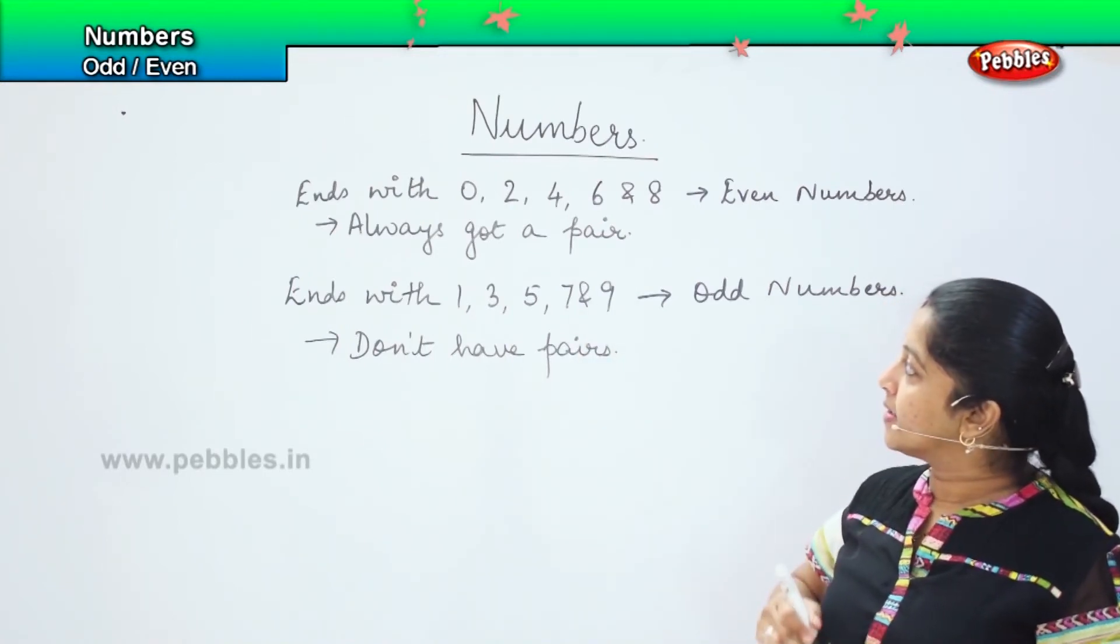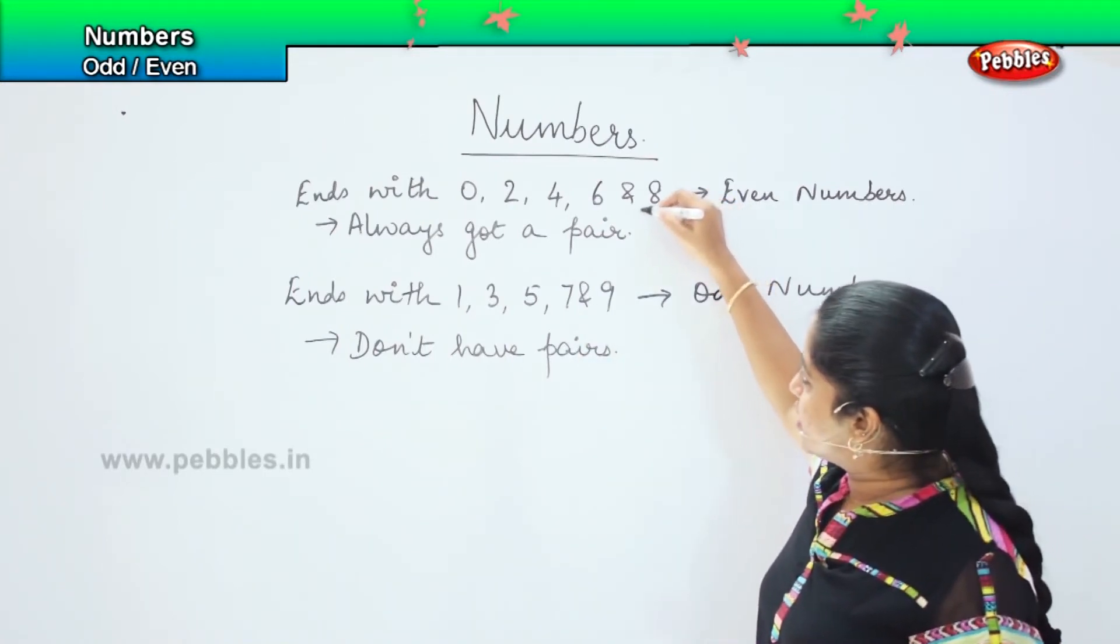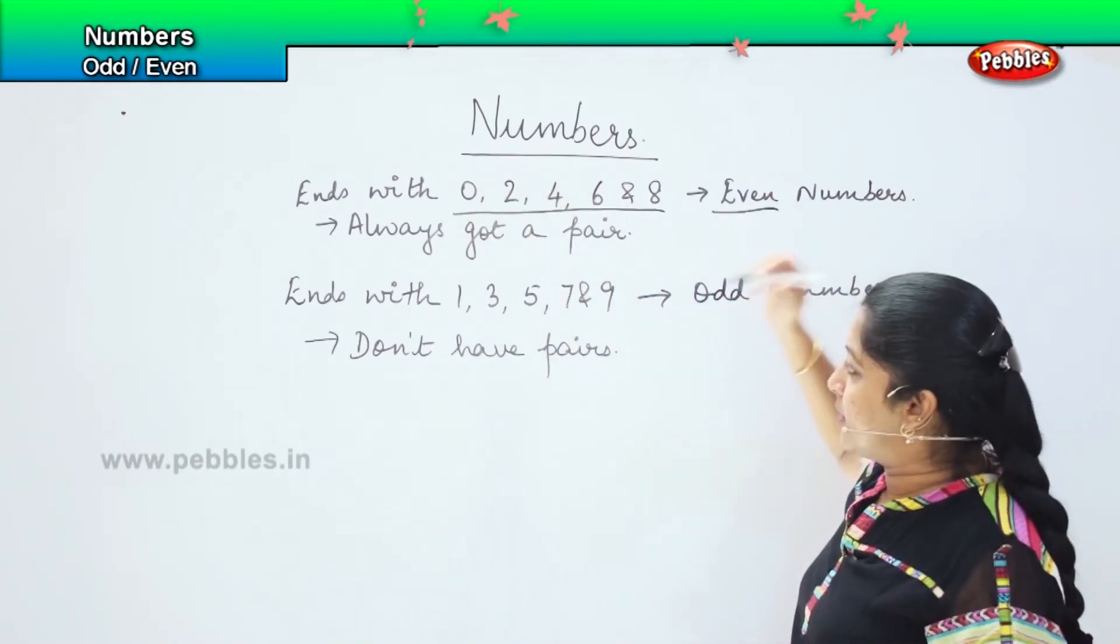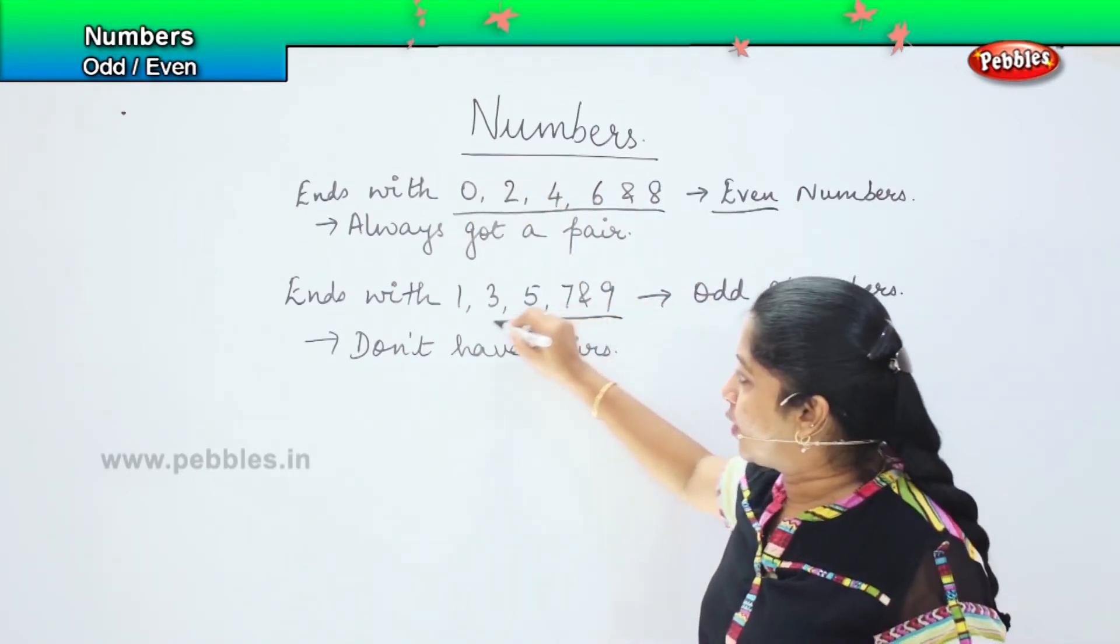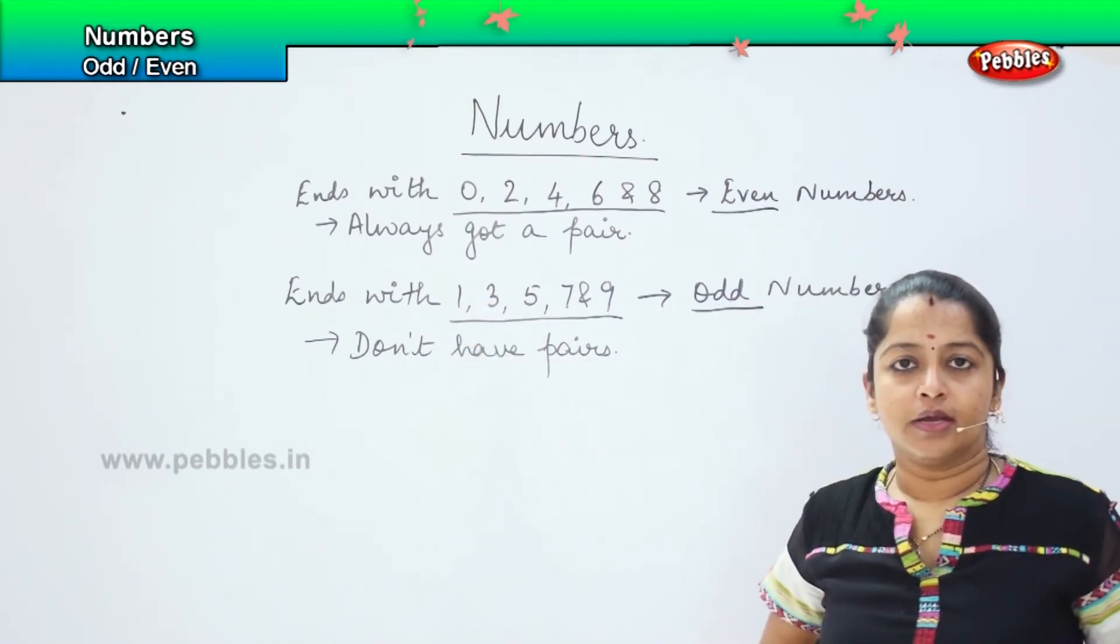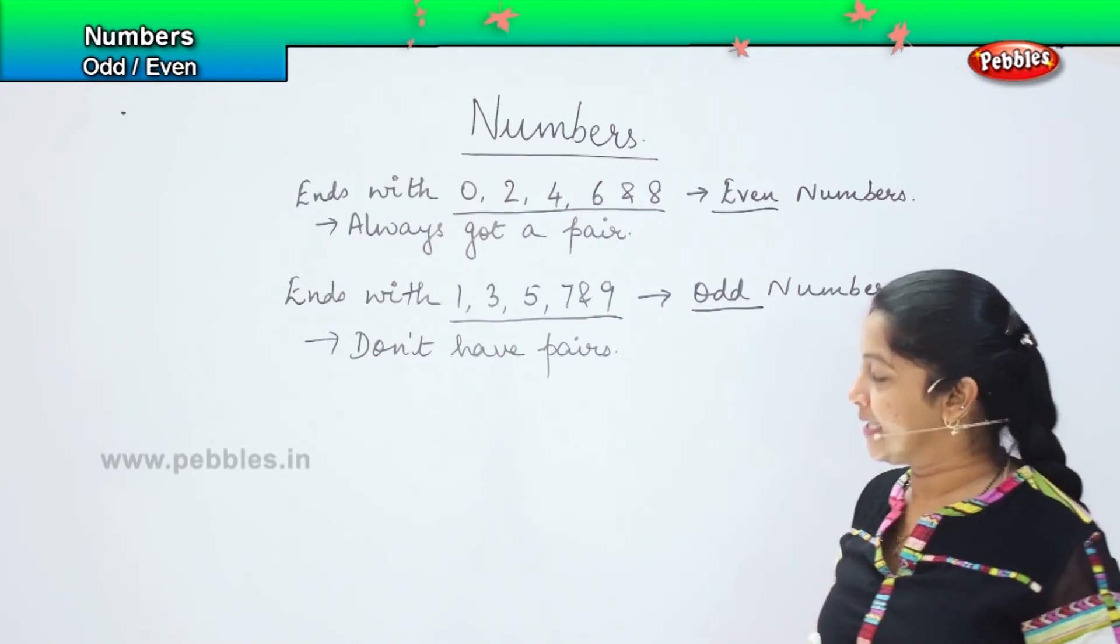So, those numbers which end with 0, 2, 4, 6, and 8 are even numbers, and numbers ending with 1, 3, 5, 7, and 9 are called odd numbers. Is it clear, children?